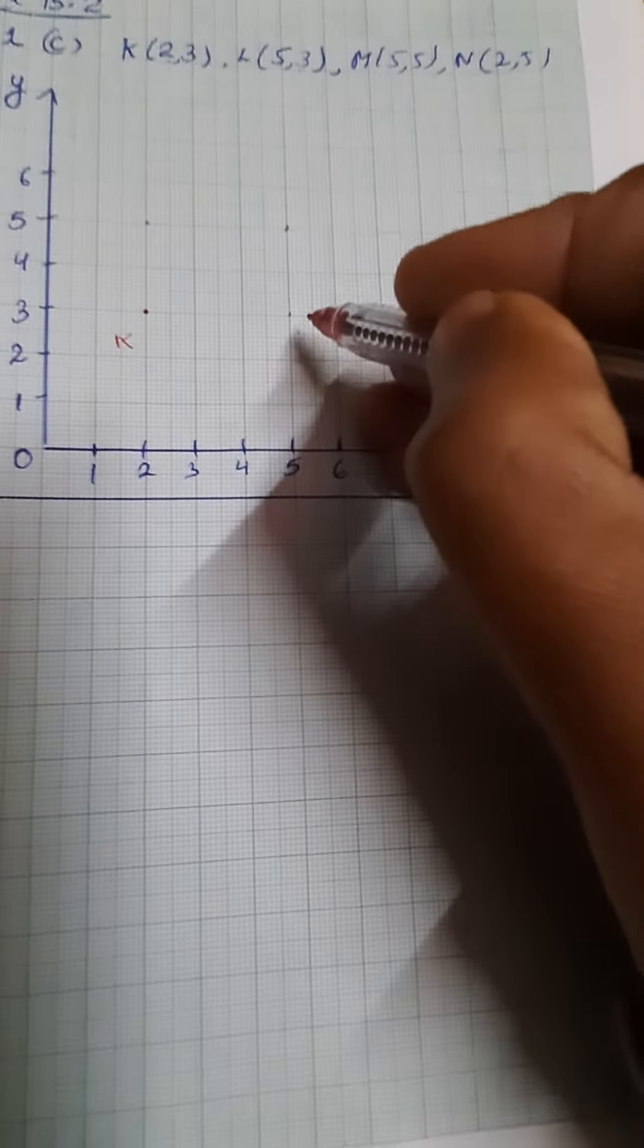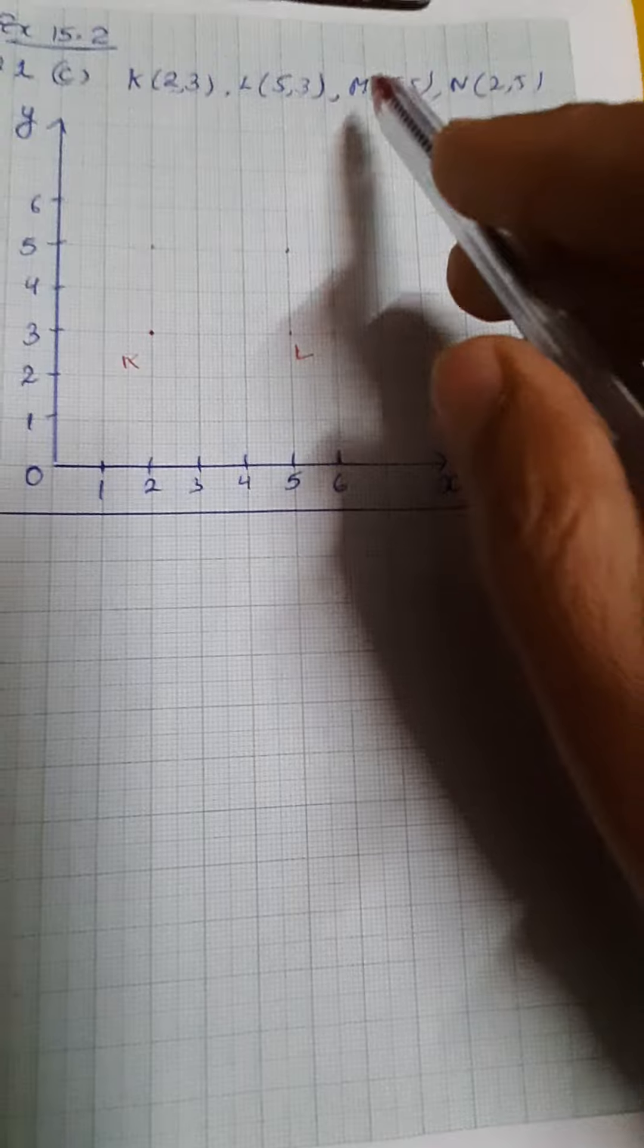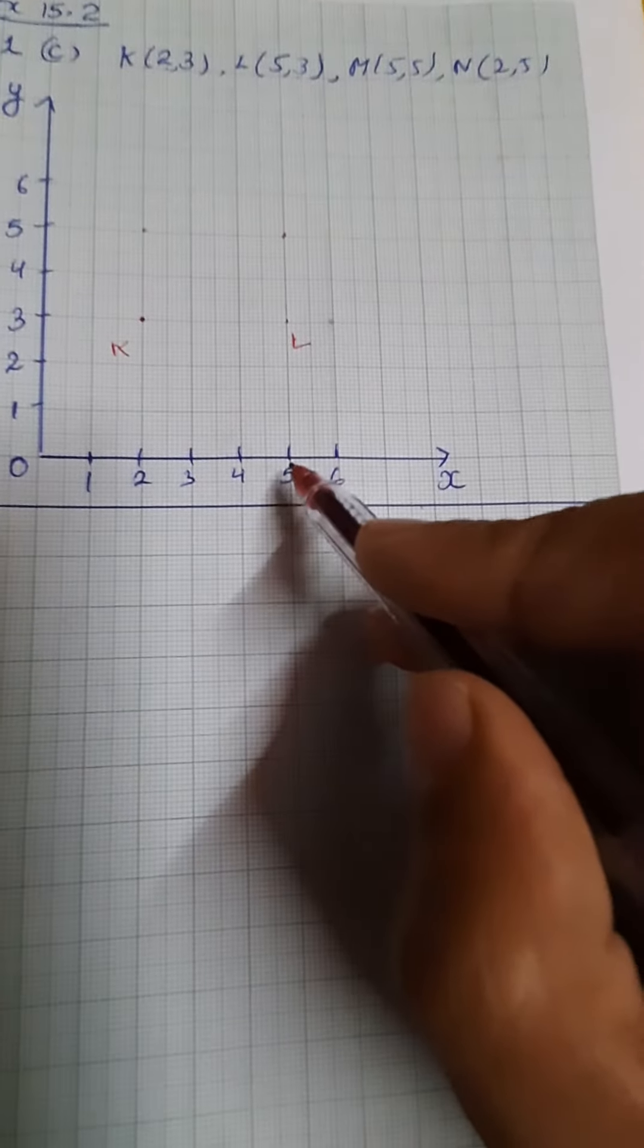Next point is M (5,5). Value of x is 5, value of y is 5. So this is our point M.